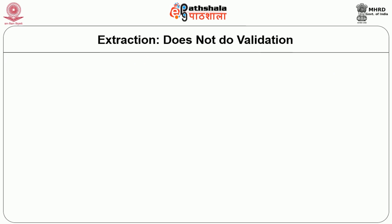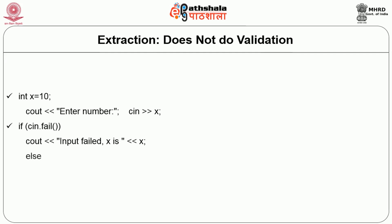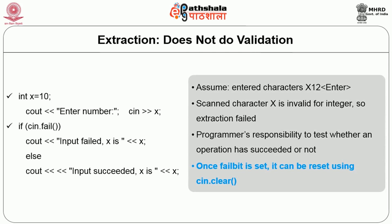The extraction operator does not do any validation. If you want to enter an integer but first enter an alphabetic character like 'x', the extraction will fail. After input or output, we can check whether the operation was successful using the fail bit. If cin.fail() returns true, the input operation has failed. Once the fail bit is set, it will not be reset automatically — it is the programmer's responsibility to clear this flag using cin.clear().